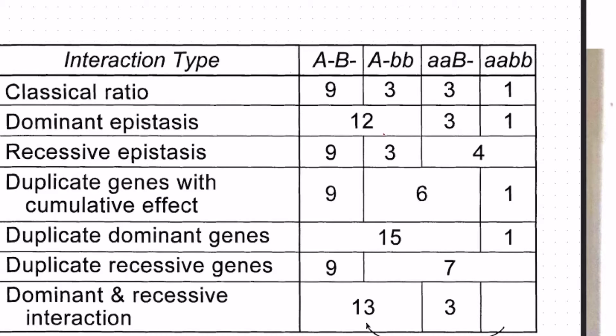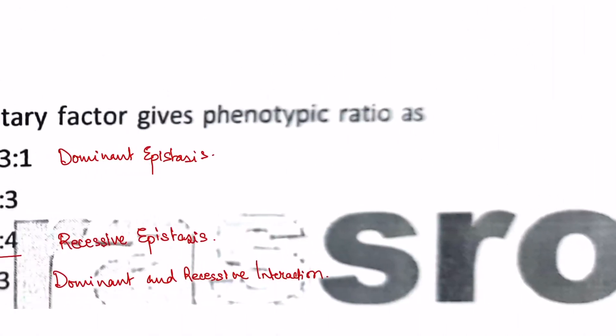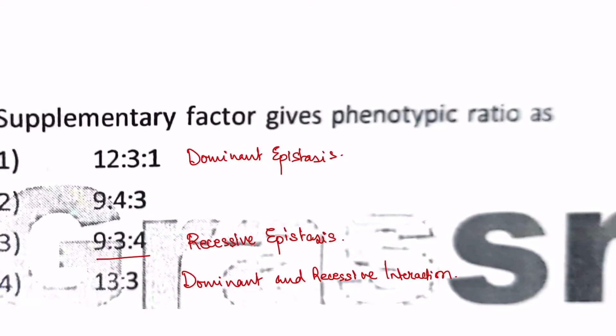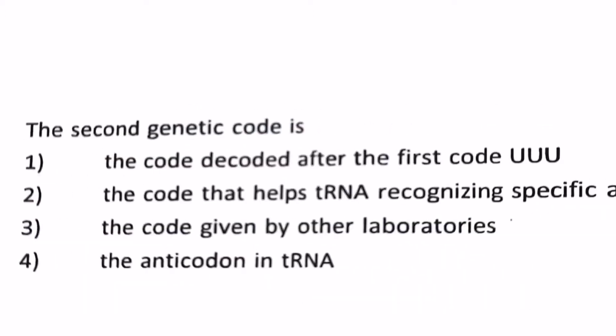And both 13:3 is shown by dominant and recessive interaction. So our answer will be number 3, 9:3:4. Our next question is the second genetic code.